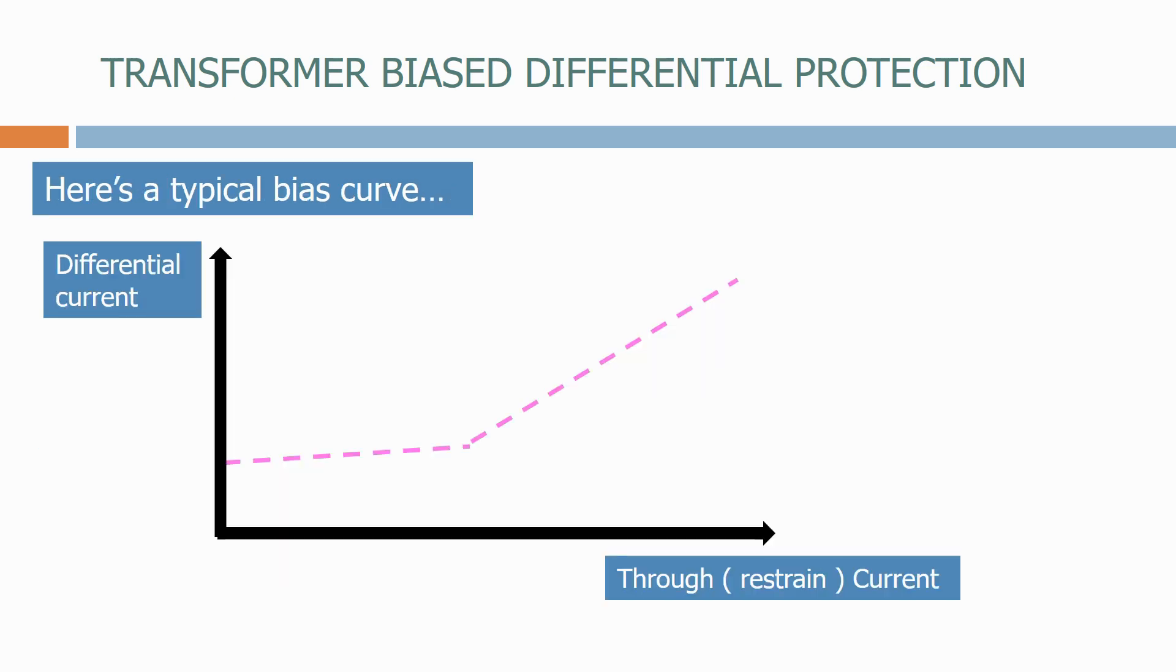Here's a typical bias curve. On the left hand side of the graph we have the differential current, which is the difference in the currents flowing through the primary and secondary CTs.